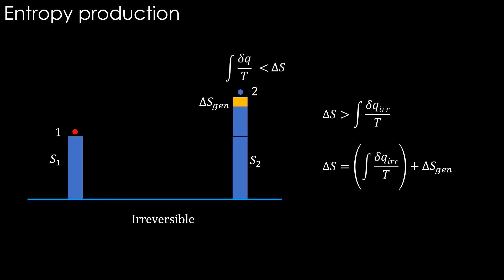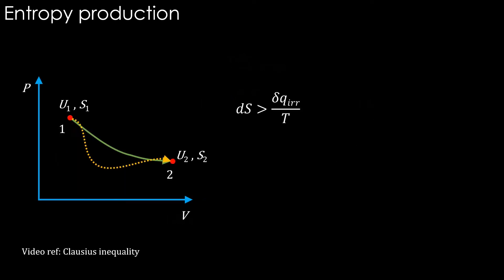From the video on Clausius inequality, we have ds equals delta Q irreversible divided by T plus 1 divided by T times delta W reversible minus delta W irreversible.